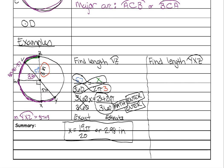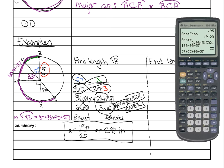So 57 plus 33 plus 90 plus 57. So 57 plus 33 plus 90 plus 57 is 237 degrees.